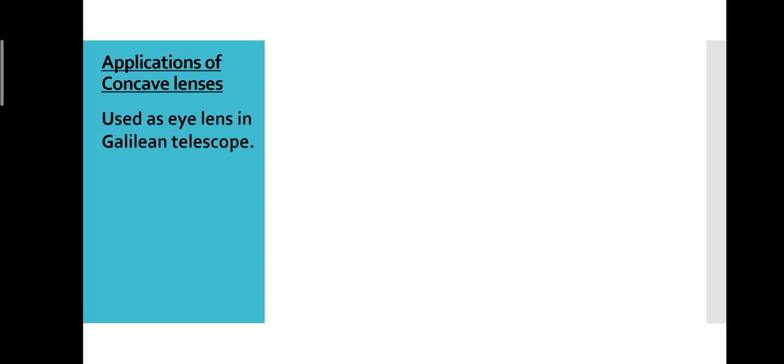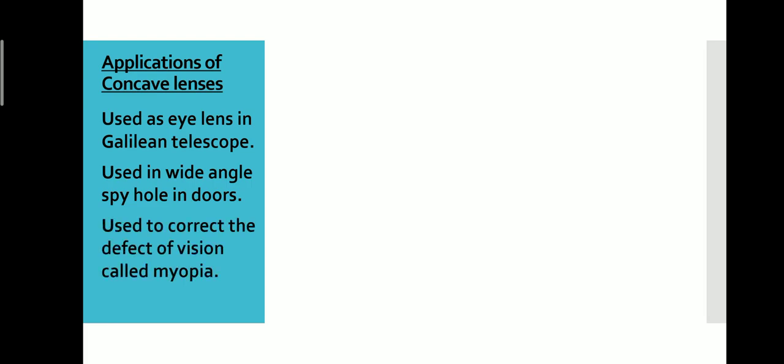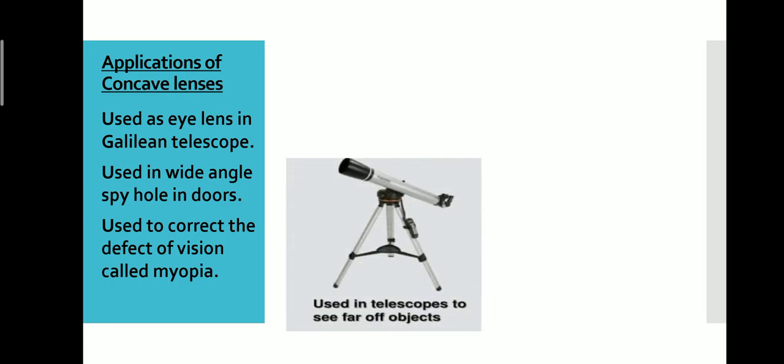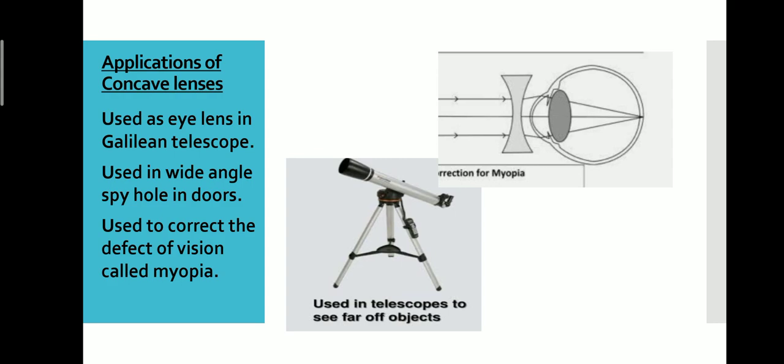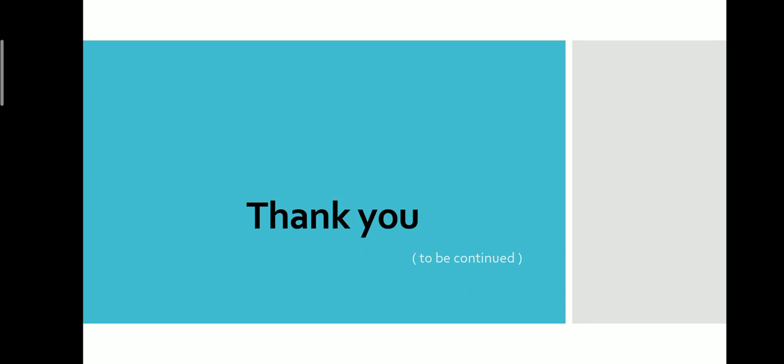The applications of concave lenses: it is used as the eye lens in a Galilean telescope, used in wide-angle spy holes in doors, and used to correct the defect of vision called myopia. The concave lens is your diverging lens. Thank you. I'll meet you in the next video.